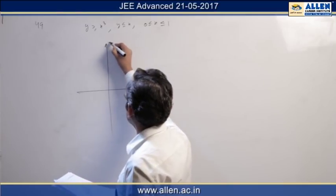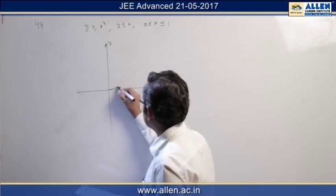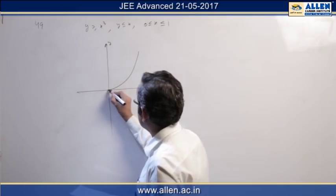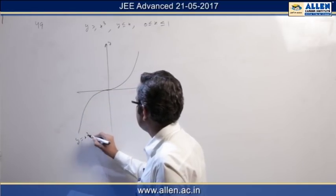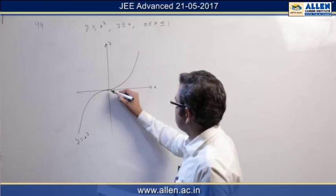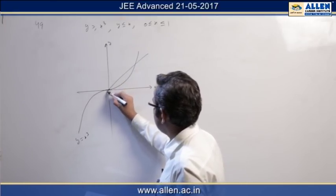So this is our x-axis, this is our y-axis. Now y = x³ graph is like this. Now y = x intersects this graph at two points, three points in fact.